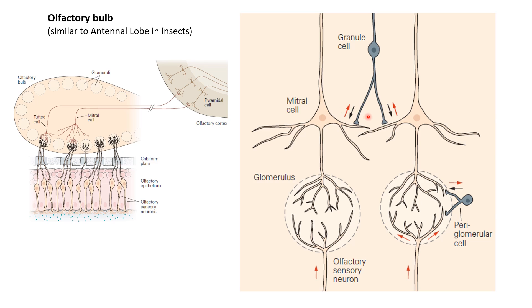There are also granule cells, which provide lateral interactions directly between mitral cells. These lateral interactions are mostly inhibitory — periglomerular neurons or granule cells are excited by sensory neurons or mitral cells and then provide inhibition back. These neurons help in either normalizing the activity of the system or increasing the contrast. For example, if one mitral cell is firing at a high rate and another at a low rate, the granule cell receives input from both and inhibits them equally. This equal subtraction has a larger fractional effect on the low-activity neuron, increasing the contrast between the two.